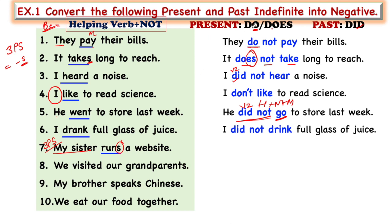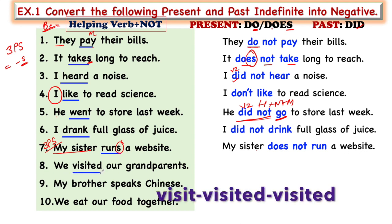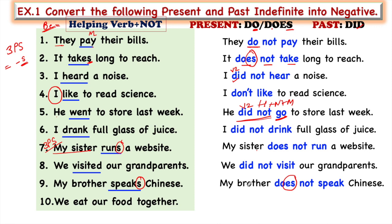We choose 'does' or 'do' according to the subject. With third person singular subjects we use 'does,' and with other subjects we use 'do.' 'Does' ends with S, and with third person singular all verbs end with S. So: 'My sister does not run a website' — we remove the S from 'runs.' Further examples: 'We visited our grandparents' → 'We did not visit our grandparents.' 'My brother speaks Chinese' → 'My brother does not speak Chinese.' 'We eat our food together' → 'We do not eat our food together.'